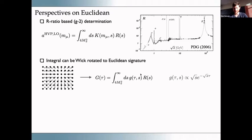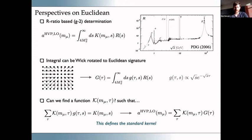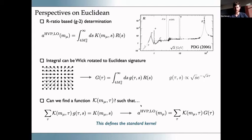We cannot exactly calculate the R ratio in a lattice calculation, but we can get the Laplace transform of that object. So here's the R ratio integrated with a Laplace kernel. Everyone knows we can directly calculate this from the lattice, but from a naive perspective we can say: we want the R ratio integrated with this kernel but what we have is the R ratio Laplace transformed. So we can form a new kernel function depending on Euclidean time tau such that when convoluted with the Laplace kernel it gives us our original kernel K.